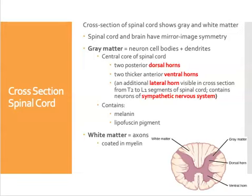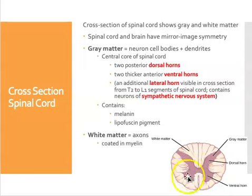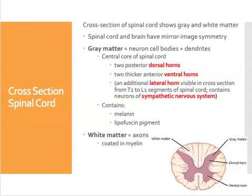We can describe regions in the gray matter. We can describe what are called the dorsal horns and the two thicker ventral horns. In some regions of the spinal cord, there's another horn of gray matter called the lateral horn. You only see the lateral horn in a section taken between T2 and L1, because the lateral horn contains neuron cell bodies and dendrites of the sympathetic nervous system. It's very regional in that one area of the cord.